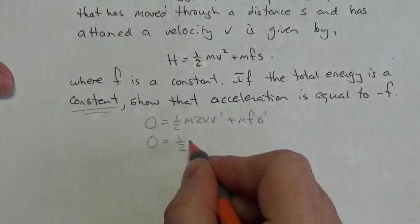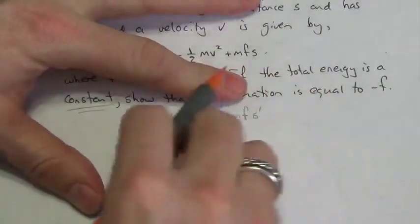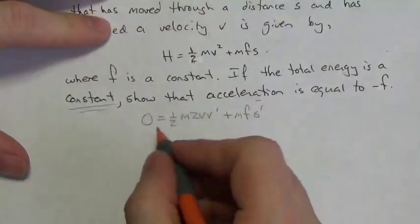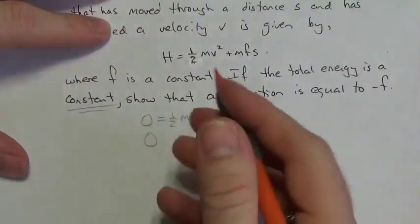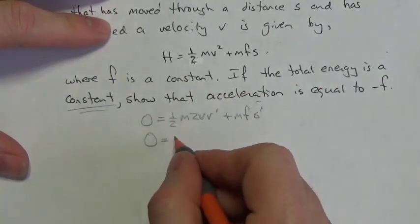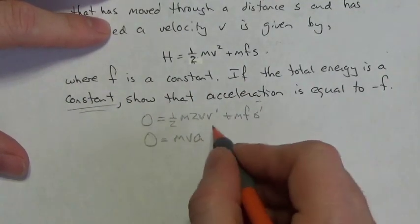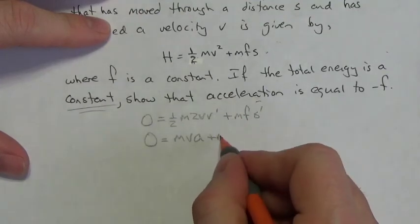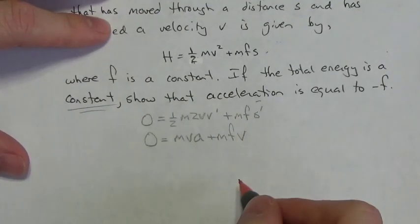Now let's rewrite. One-half times two cancels, leaving mv · v′ plus m · f · s′. And s′ is v, so we get mv·a plus m·f·v.